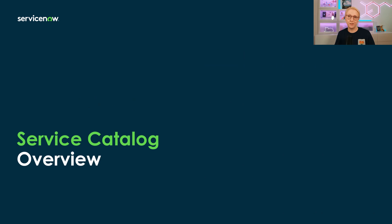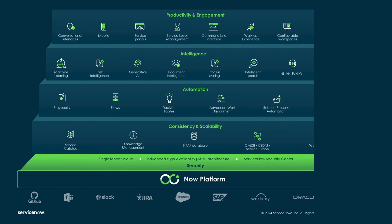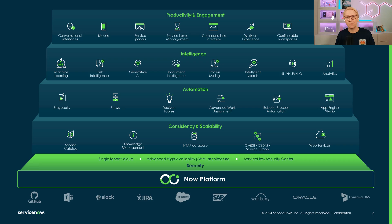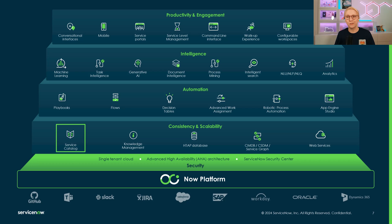The first platform feature we'll look at today is the Service Catalog. The Now platform digitizes workflows across functions and critical business systems by connecting them end-to-end on a single platform, so that companies can maximize the value of existing IT investments, cut costs, and make impactful improvements across core business processes. One of the key areas for automation is the Service Catalog.